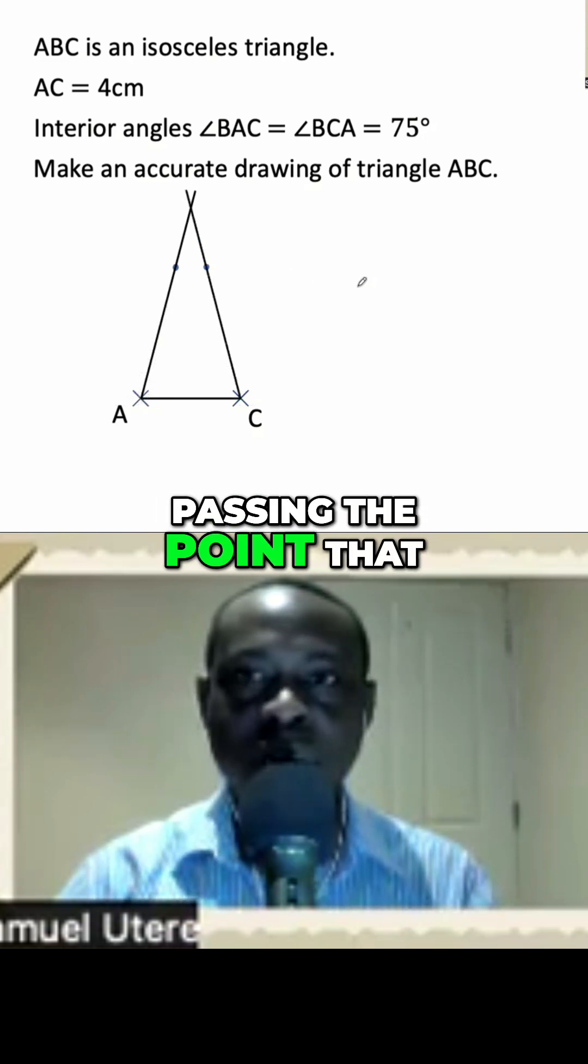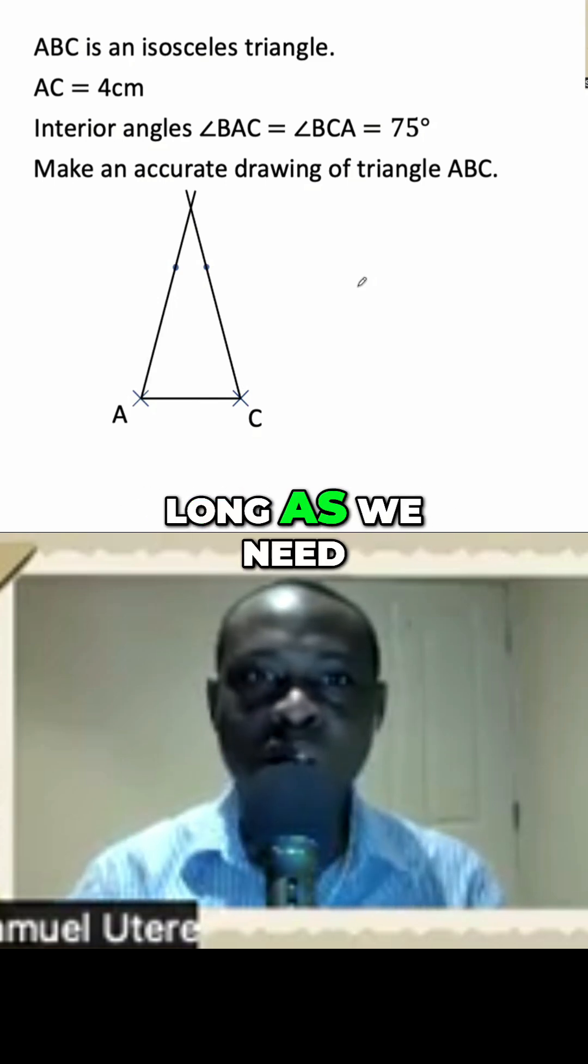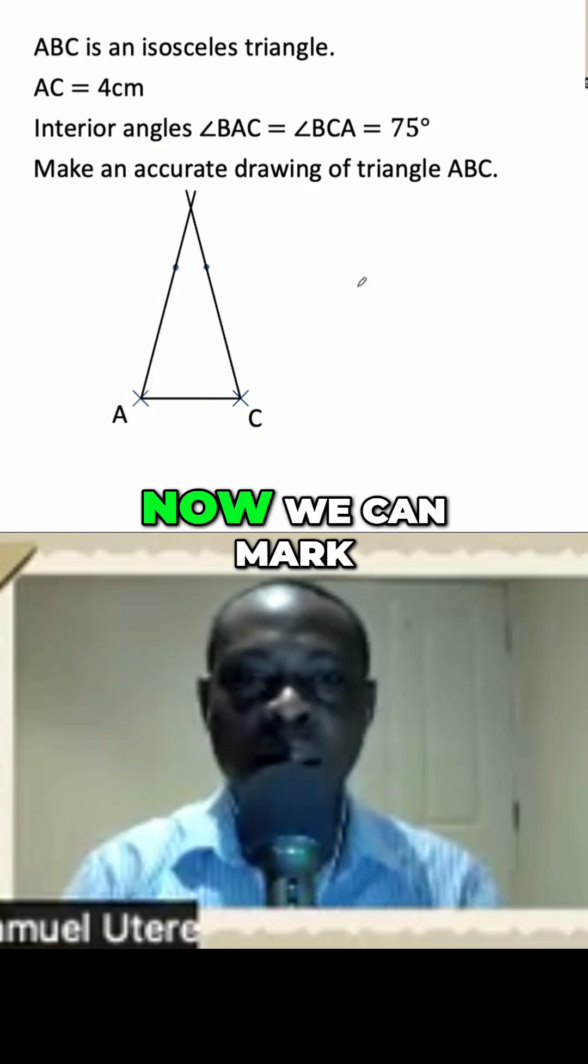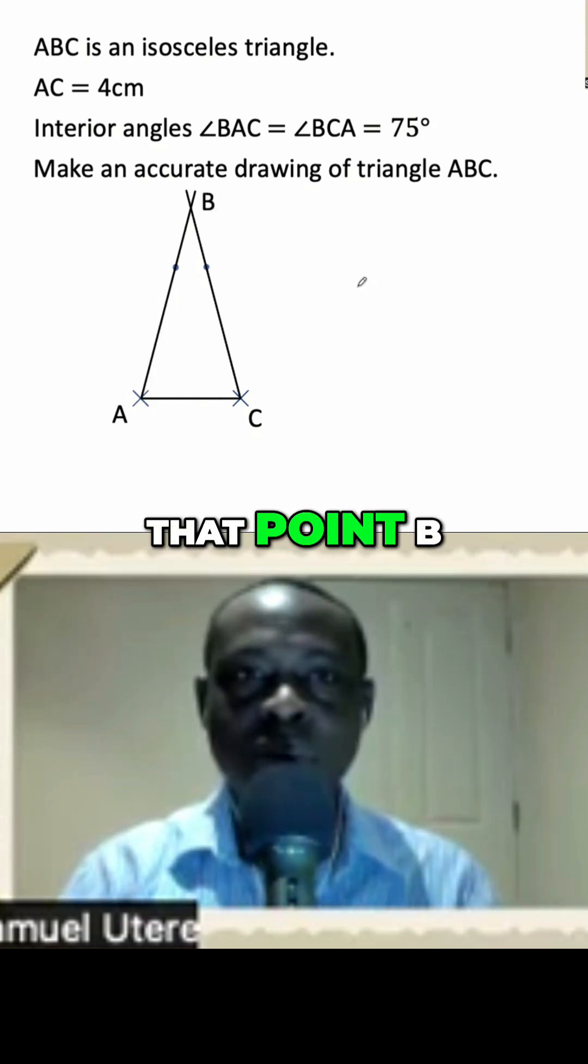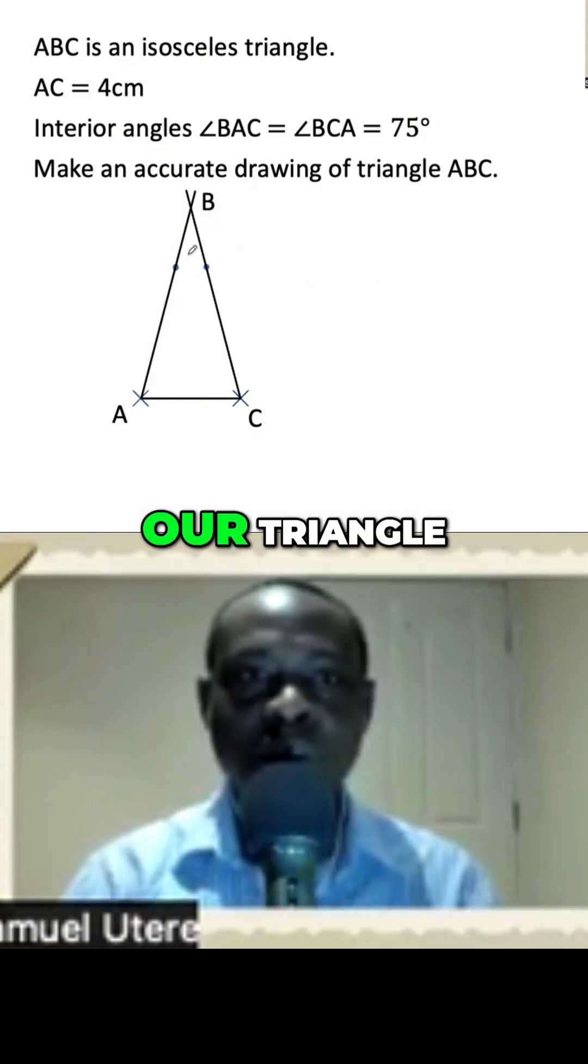passing the point that we have marked. Again, we'll draw it as long as we need it to be until it meets the other line. Now we can mark that point B because we have just completed our triangle.